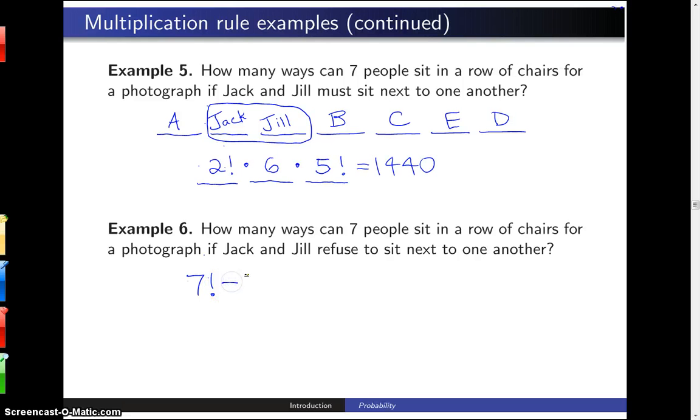Then if we subtract those fourteen hundred and forty out from seven factorial, we should get the number where Jack and Jill are sitting apart.